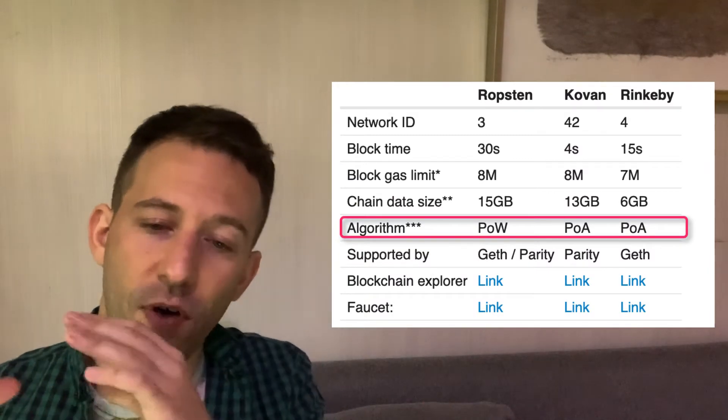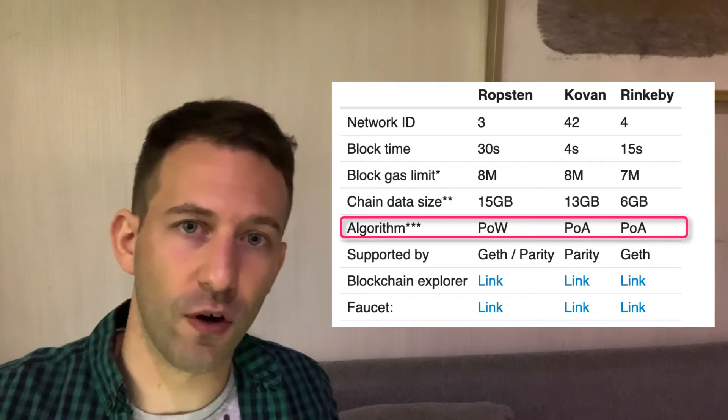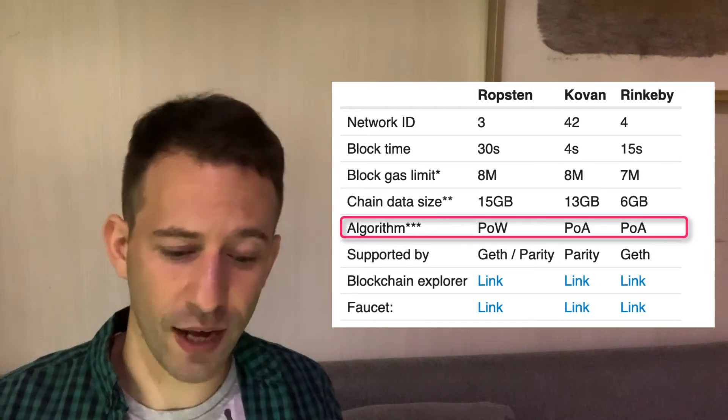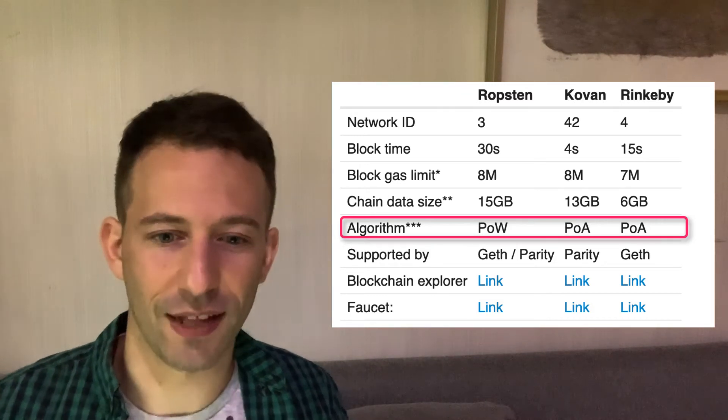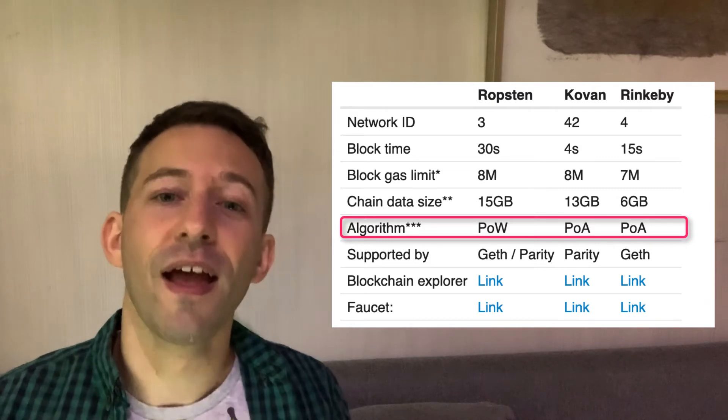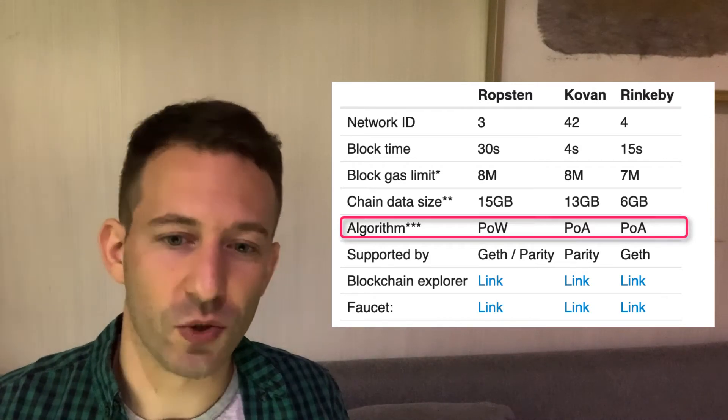Then we have the consensus algorithm — how consensus is established. For Mainnet we use proof-of-work, so ideally we want the same for the public testnet. For Ropsten we use proof-of-work, like Mainnet, so that's good. For Kovan and Rinkeby it's proof-of-authority, which means that certain persons in the network are deemed worthy of trust and have the right to add transactions. This is good for security because it's not possible for a hacker to hack the testnet — though hacking a testnet doesn't have any real life consequences — but for developers it can be annoying because sometimes they can't use the testnet because of that.